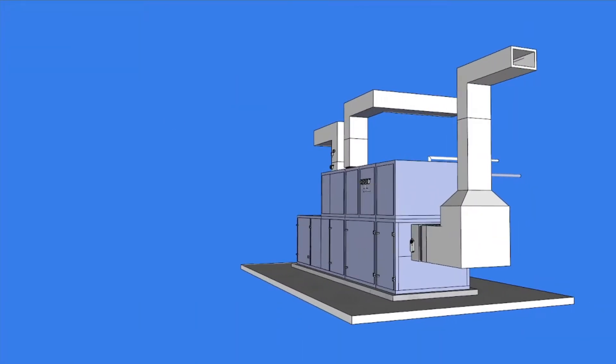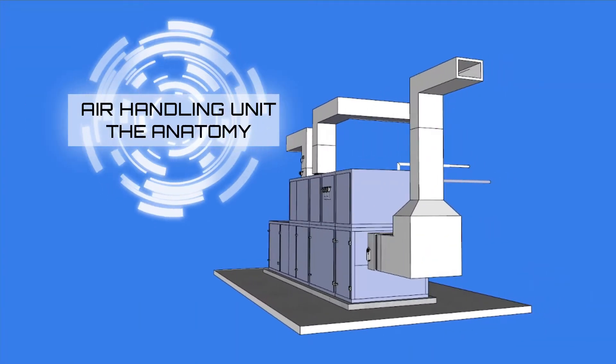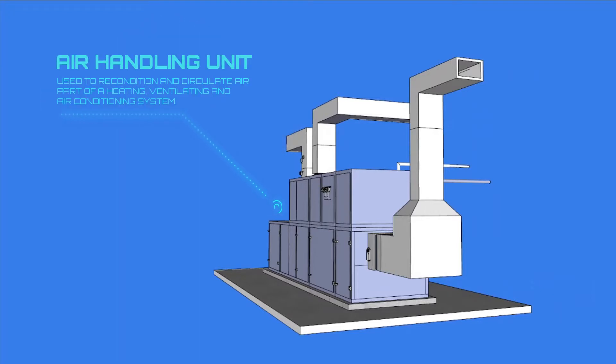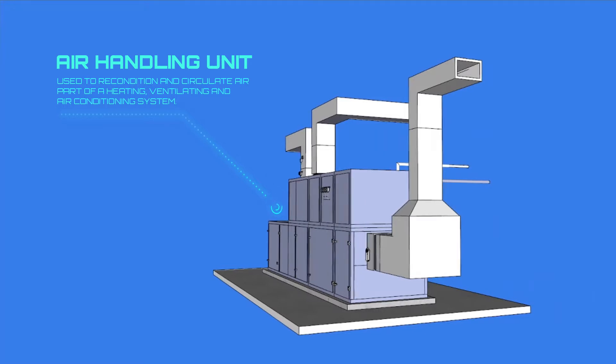The Anatomy of Air Handling Unit. Air handling unit is used to recondition and circulate air as part of a heating, ventilating and air conditioning system.